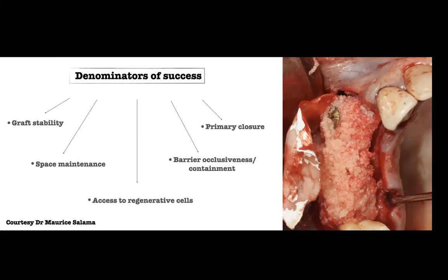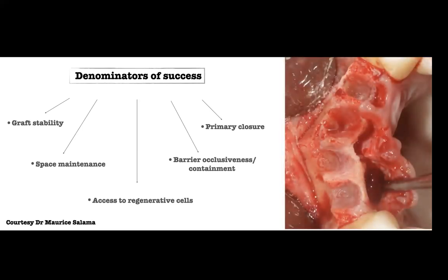Second is space maintenance. We need to create and maintain a space so osteoblasts and osteoclasts can enter, resorb bony particles, and lay down vital bone — a process that takes several months. Here we use a combination of tenting screws and bone graft to support a collagen membrane. If using titanium-reinforced membrane or titanium mesh, you may not need the tenting screw since the rigid barrier won't collapse. In most cases, I am not doing any decortication.